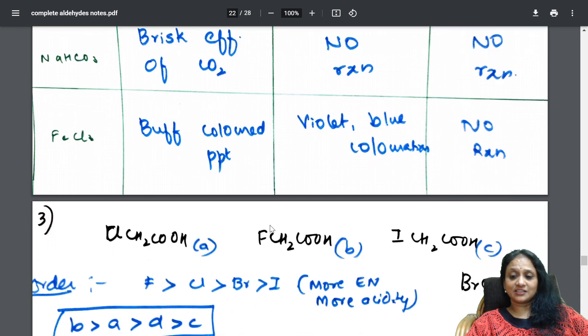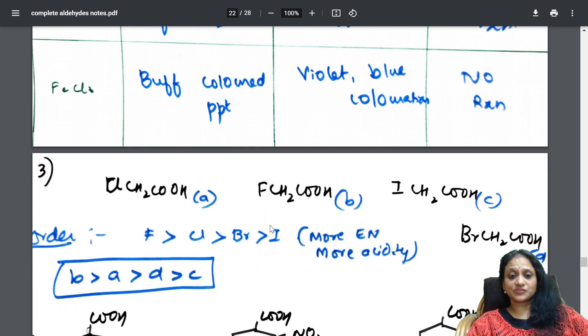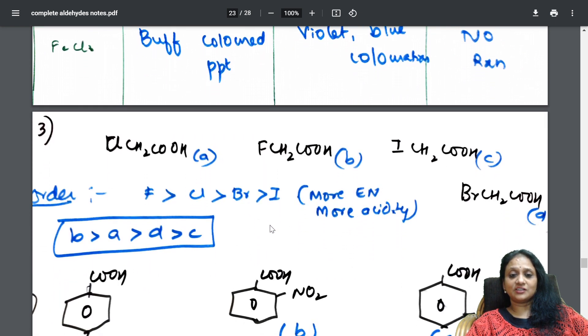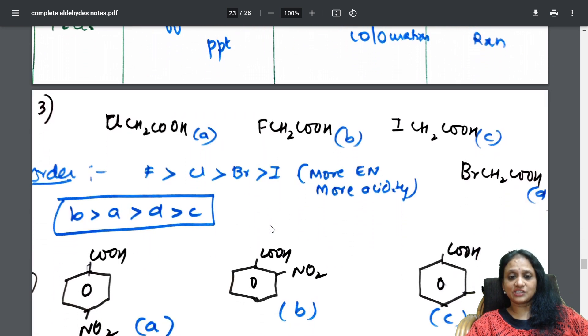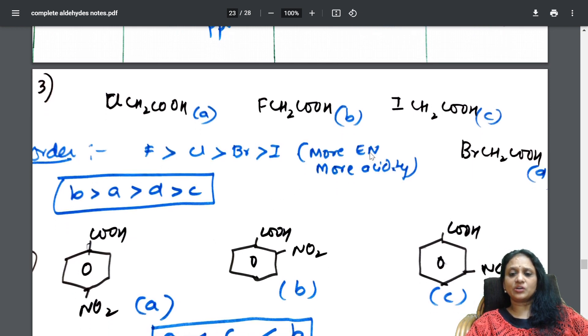Last but not the least. Acidity order reactions. Just check. Acidity order. If this is given. How do you write the acidity order? What is the reason? It will be very well known. More electronegative. More acidity. The reaction would be.